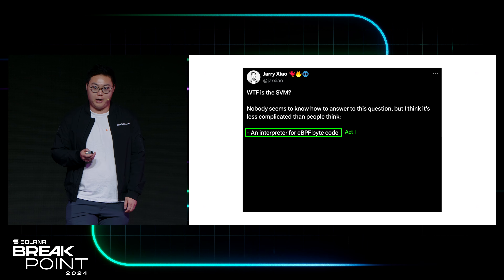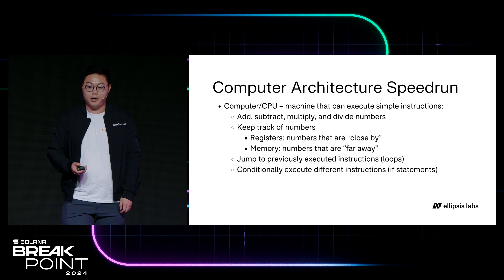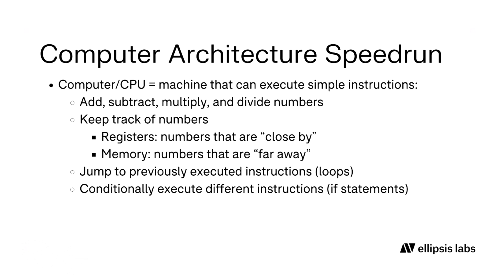I don't think anyone knows what that means, so I'll start from the top with a speed run of computer architecture. A computer or CPU is literally just a machine that can execute simple instructions. These instructions include things like adding, multiplying, subtracting, and dividing numbers. There are two ways you can keep track of numbers: registers, which are numbers that are really close by, and memory, which are numbers that are really far away. Instructions can also jump to a previously executed instruction and conditionally execute different instructions.